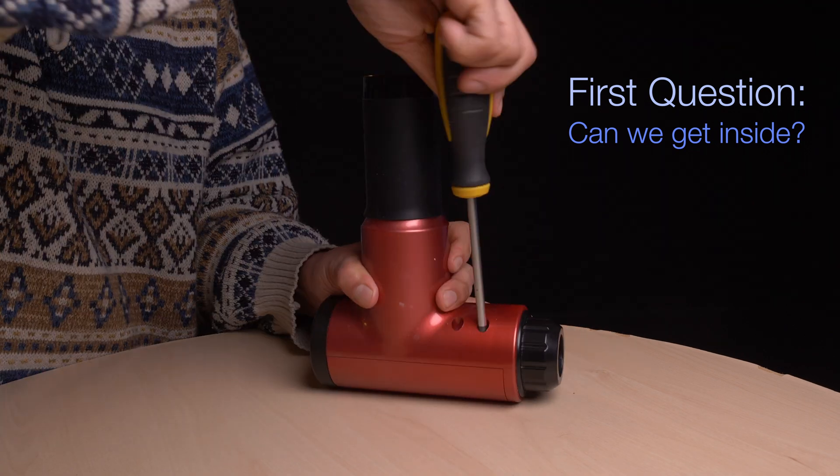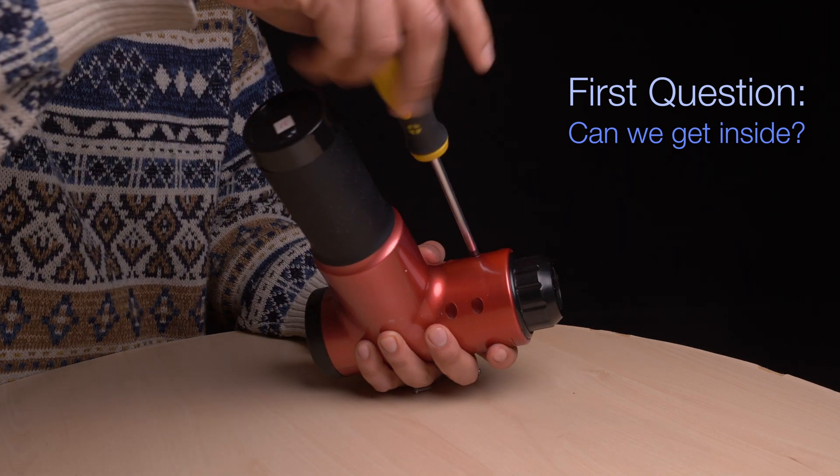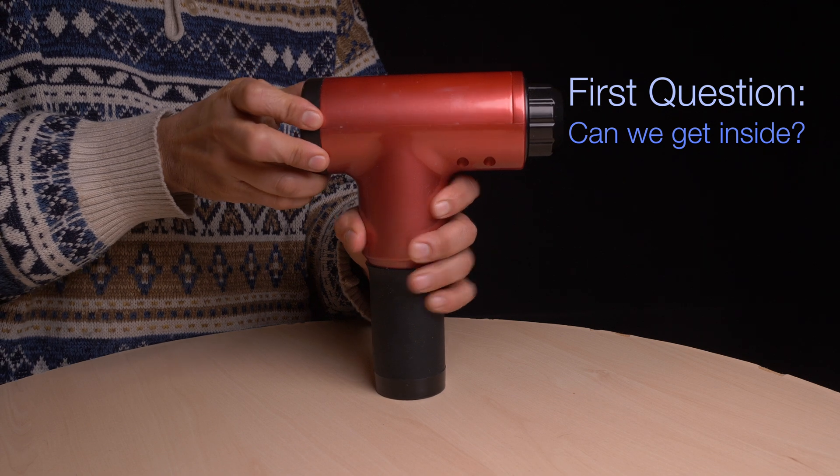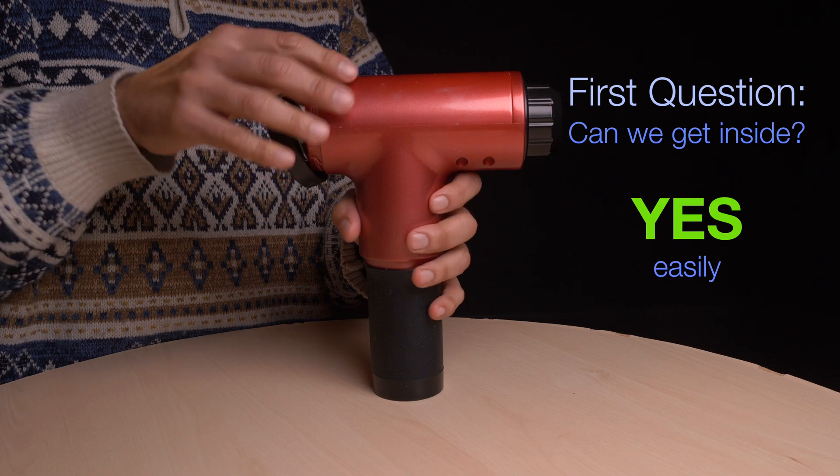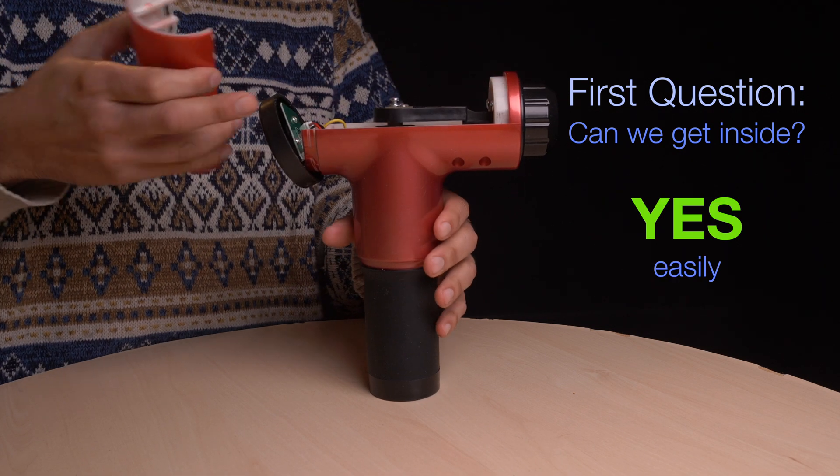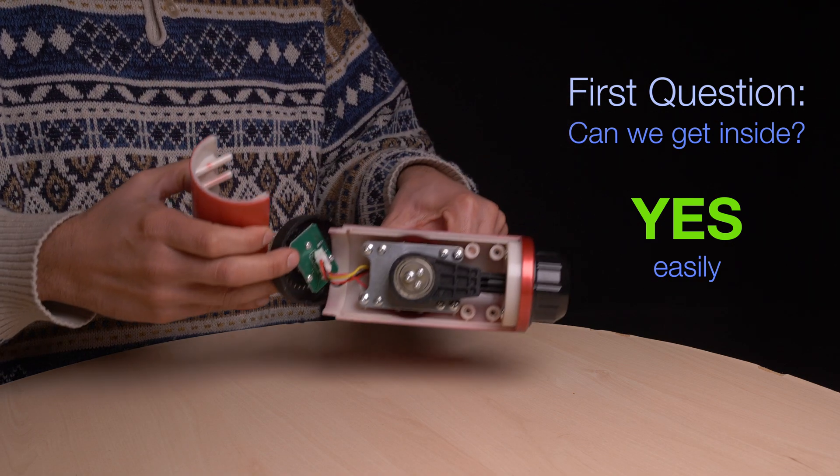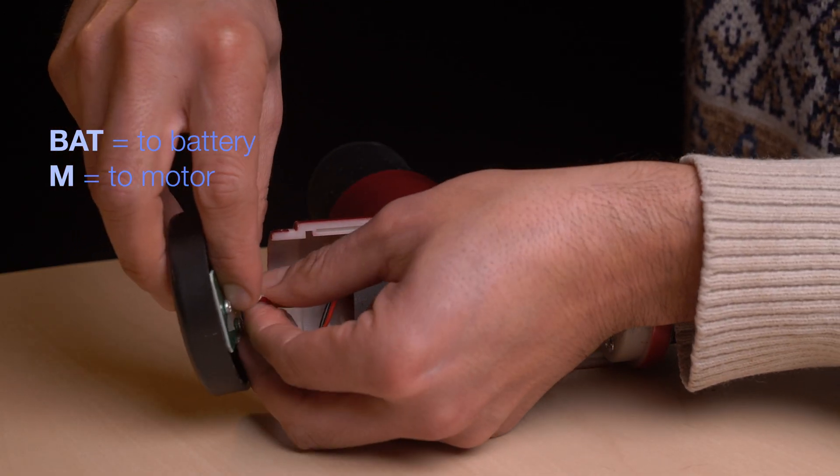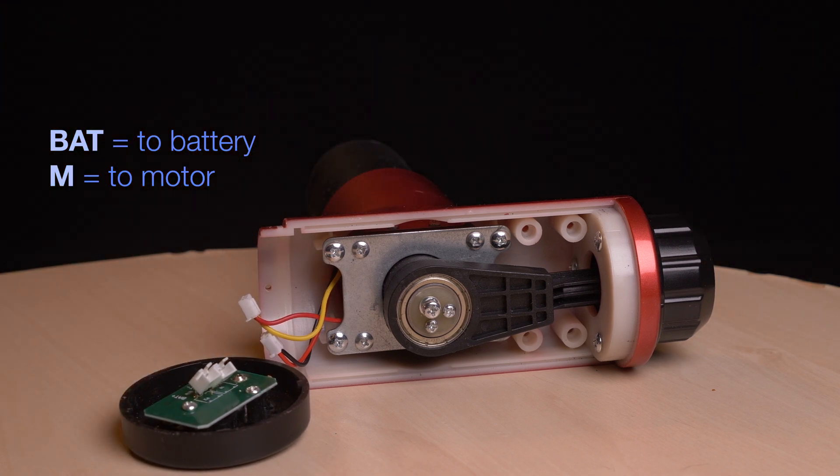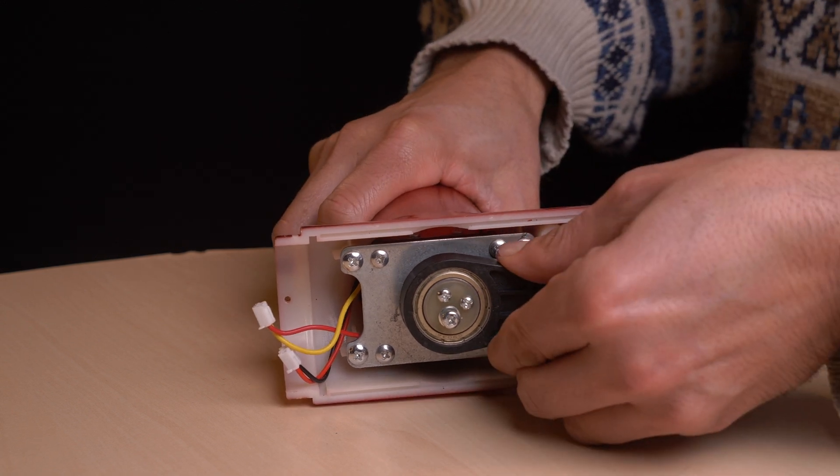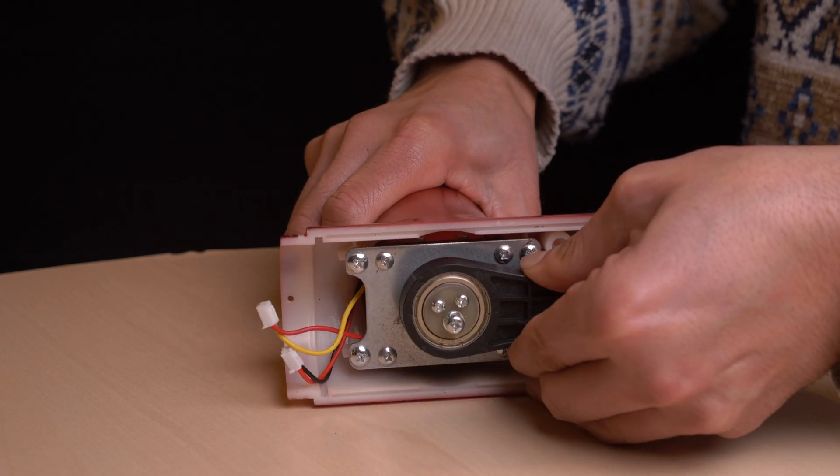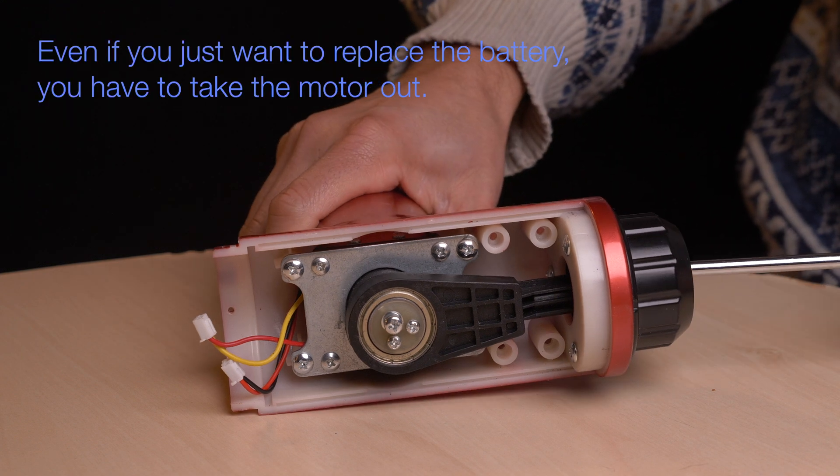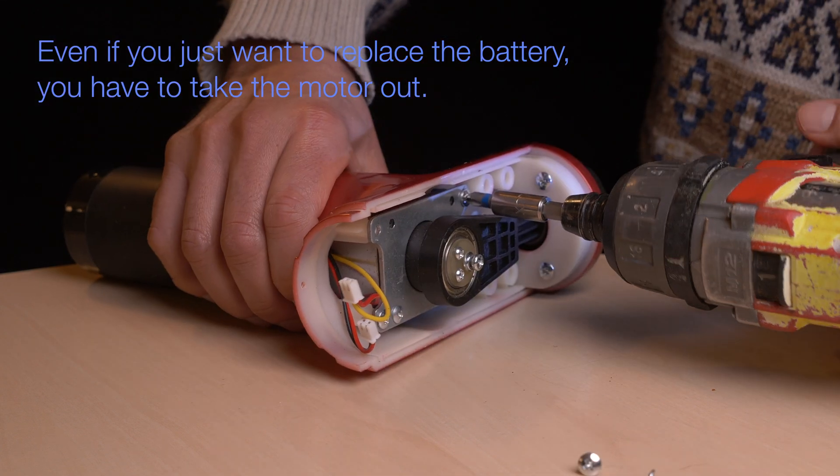Don't we all complain about how stuff nowadays is glued shut? Well, so question 1, can we get into it? And the answer is yes, easily. It's just 5 screws. On the control board, there are 2 plugs connected. One goes to the battery and one goes to the motor. This is how the rotations of the motor are being transformed into vibrations. There is just not enough space to push the connector down, the connector from the wire to the battery.